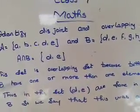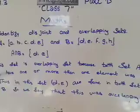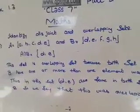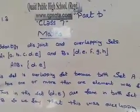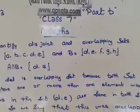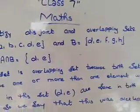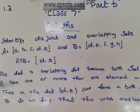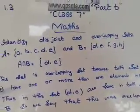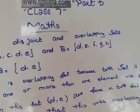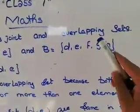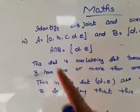Disjoint sets are those sets where set A and set B do not have any element in common — they are totally different, and we say that this is a disjoint set. Overlapping sets are those sets where set A and set B have one or more than one element in common, and we say that this is an overlapping set.